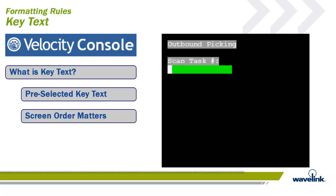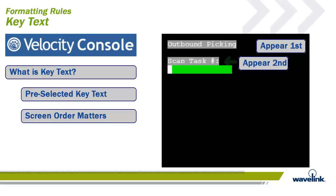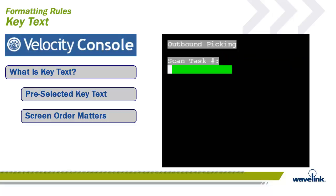It is important to note that key text match is free form and does not discriminate on column and row. Therefore, it is important that when selecting key text, it is known that the order of the text on the screen matters. Outbound picking must appear first in the drop-down order, and scan task number must appear any time after. If this order is not followed, the screen is not selected for reconfiguration.